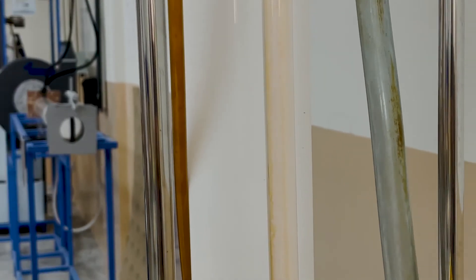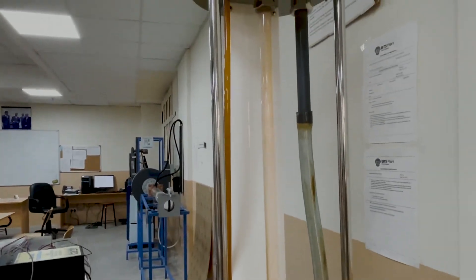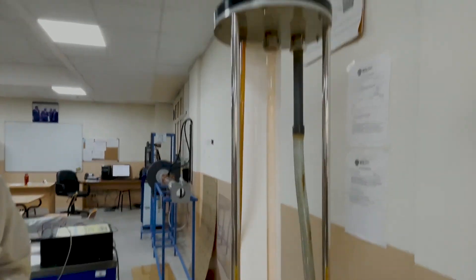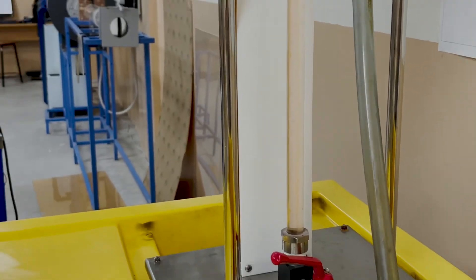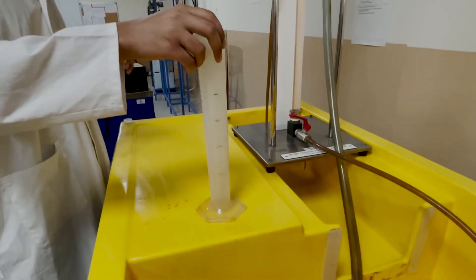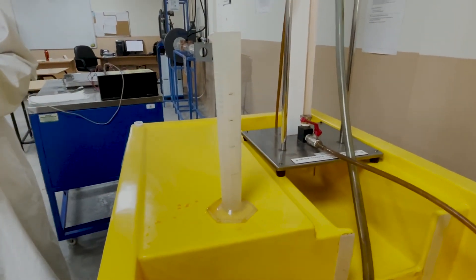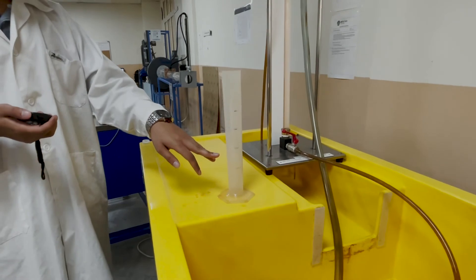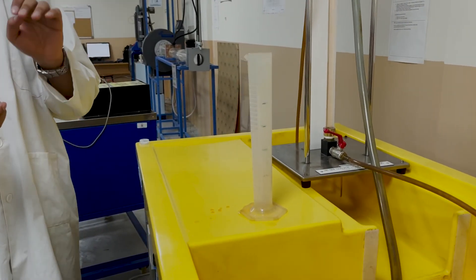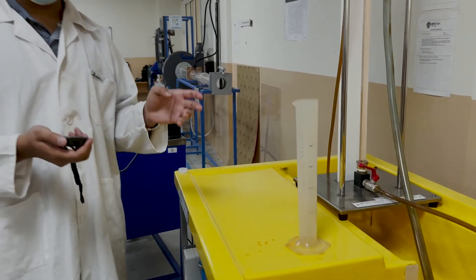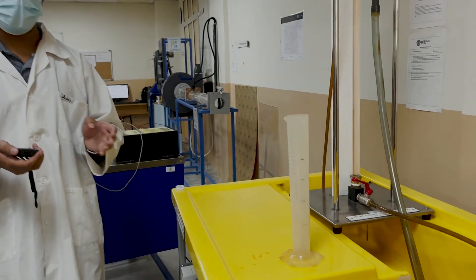Now to verify whether this is a turbulent flow, we have to do the similar procedure again. The water will be collected again in the measuring tank using the stopwatch. We will measure, for example, 10 seconds how much water is being collected in the cylinder, and we will put it in the formula and we will measure whether it is a turbulent flow or not.